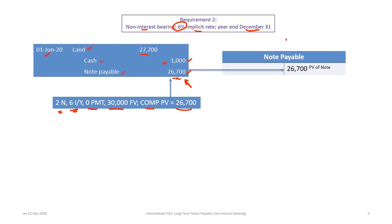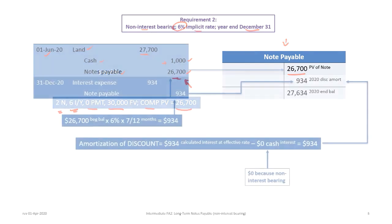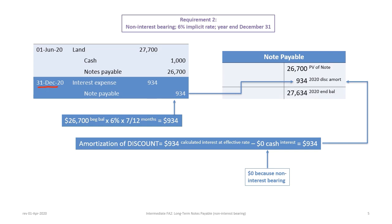We start a T-account for the note payable balance, beginning with $26,700 representing the present value of the note. At the intervening year-end of December 31st, we accrue interest on the note. The interest accrual is calculated as follows: $26,700 beginning balance multiplied by 6% interest, multiplied by 7/12 months — because the time period inclusive from June to end of December is seven months, not six. Many students make the mistake of using six months, but it is actually seven months inclusive.